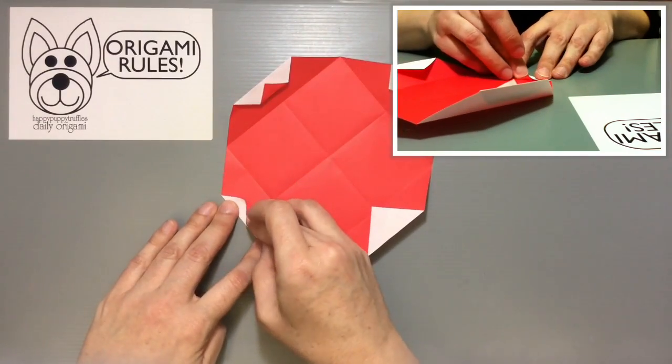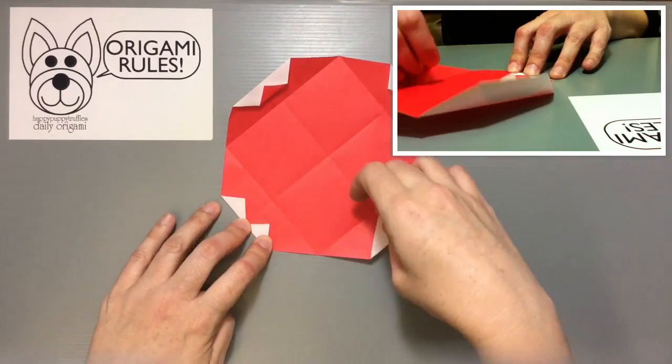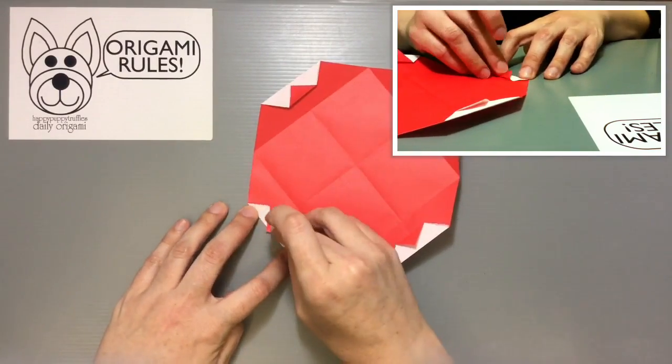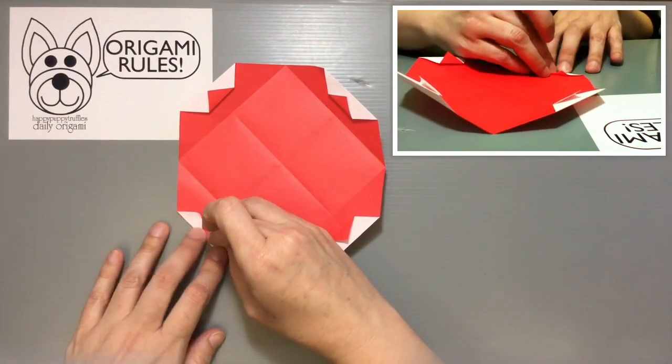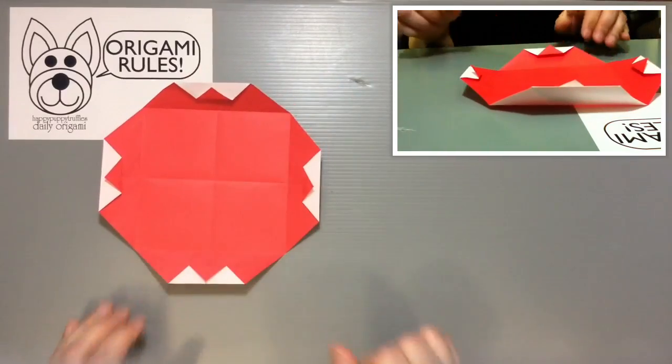A little triangle of red there, you can see. I just go around and do this for all four sides.